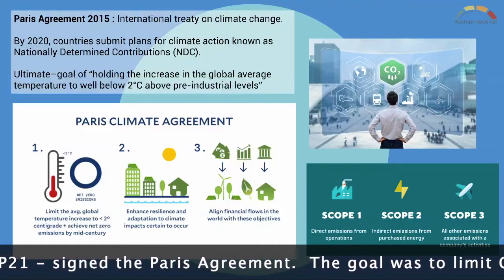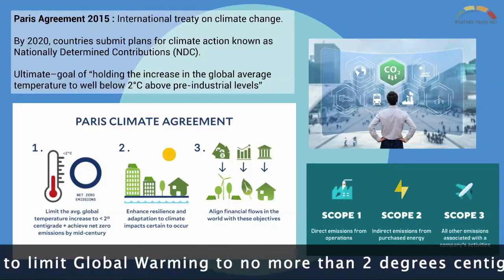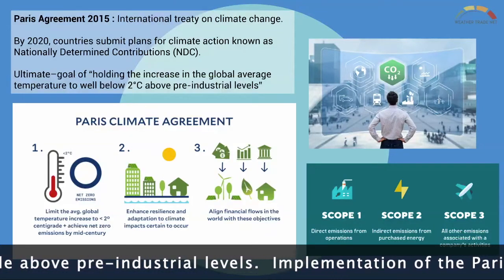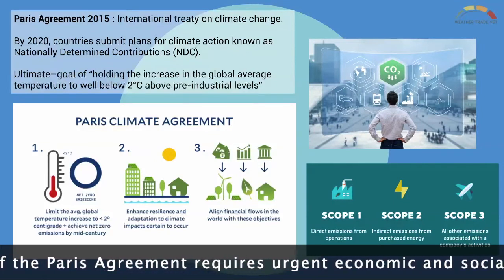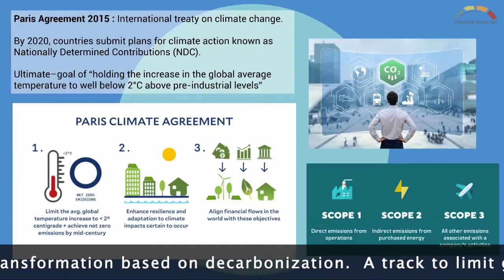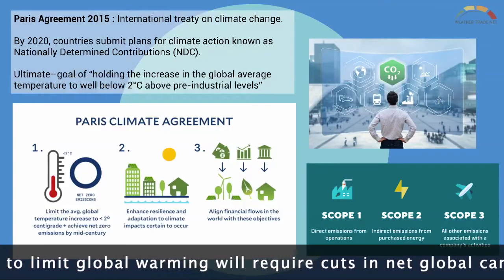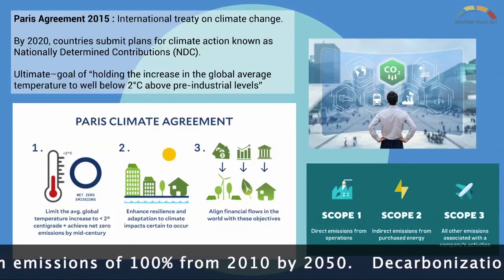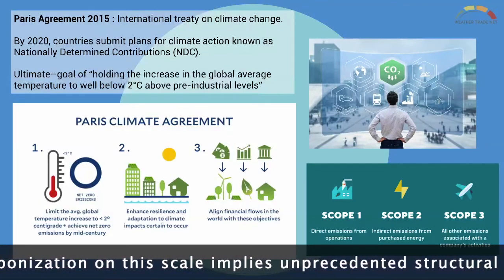The goal was to limit global warming to no more than 2 degrees centigrade above the pre-industrial levels. Implementation of the Paris Agreement requires urgent economic and social transformation based on decarbonization. A track to limit global warming will require cuts in net global carbon emissions of 100% from year 2010 to year 2050. Decarbonization on this scale implies unprecedented structural changes in economies.